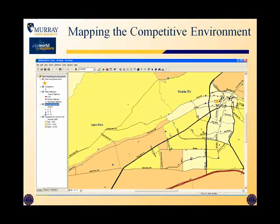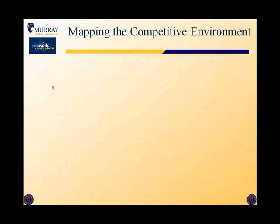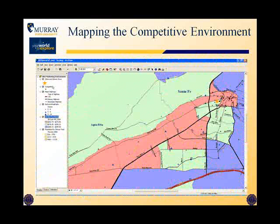We'll also use a thematic map to display characteristics of the local population. In that first task — mapping the competitive environment — you'll end up with a map that looks something like this. Notice on the left side you have bed and breakfasts rated by size, displayed by the number of rooms they have, and also competitors. In the map you make, you will distinguish between jewelry stores and souvenir shops in the display of competitors.